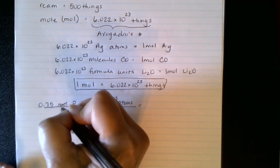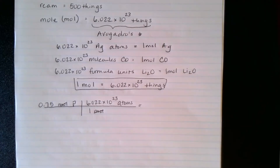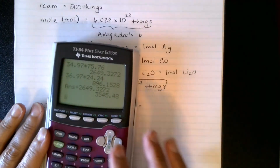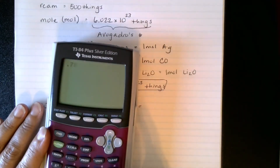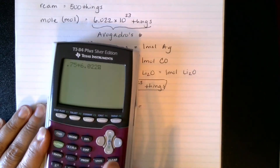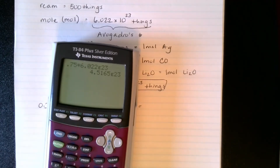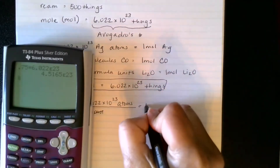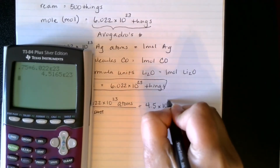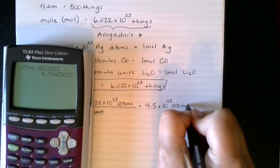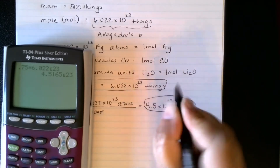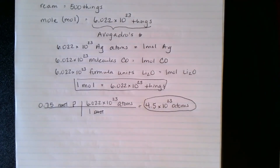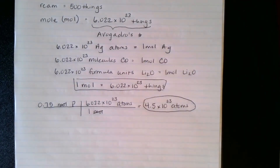Moles cancel, and I take 0.75 times 6.022 times 10 to the 23rd. On my calculator, I take 0.75 times 6.022 using the exponent button, 23. And 0.75 only has two significant figures, so I get only two in my answer: 4.5 times 10 to the 23rd phosphorus atoms. This would be the same whether it was phosphorus, tungsten, silver, or lead — it's the same number all the time.